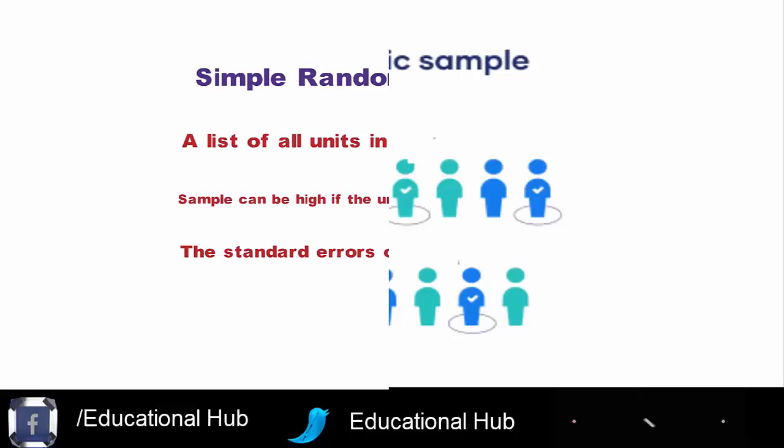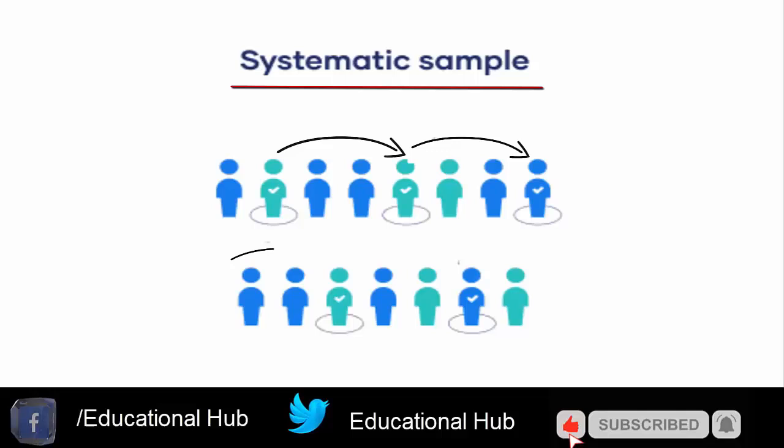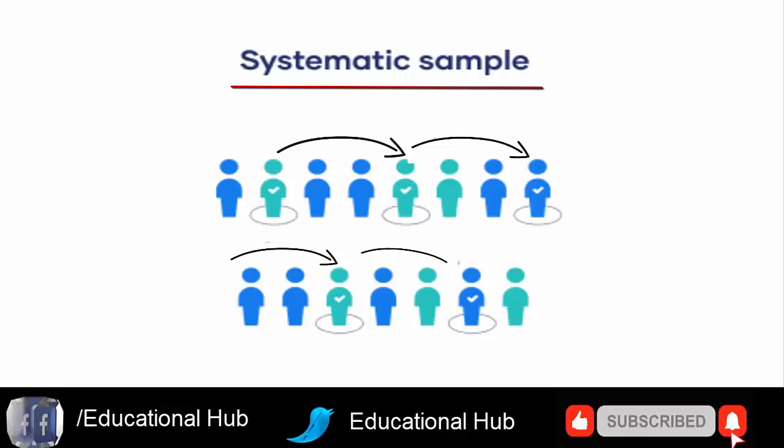2. Systematic sampling. Systematic sampling is where every nth case after a random start is selected. For example, if surveying a sample of consumers, every fifth consumer may be selected from your sample. The advantage of this sampling technique is its simplicity.